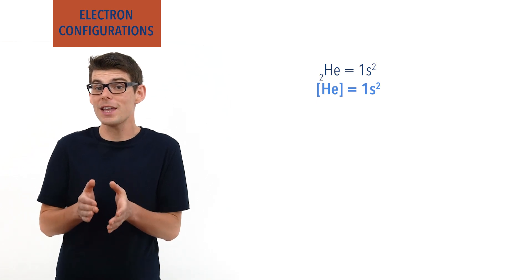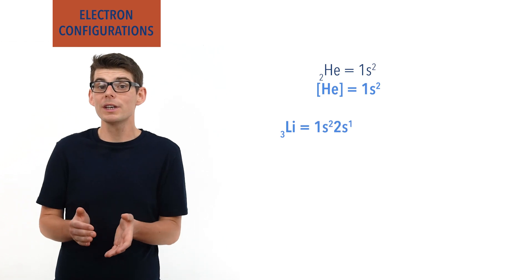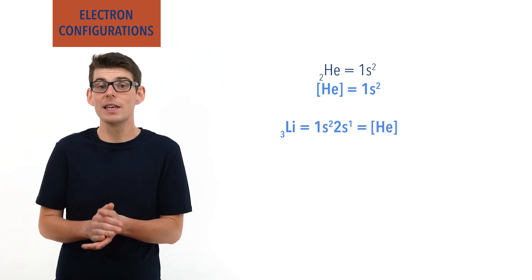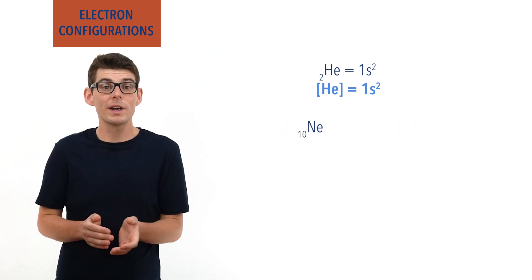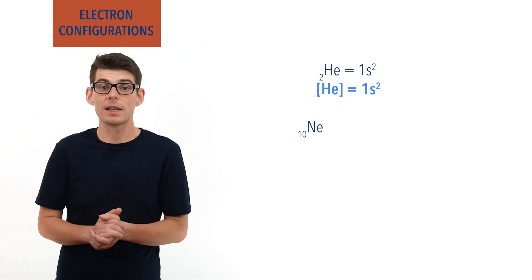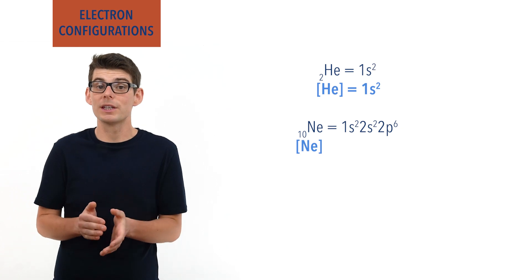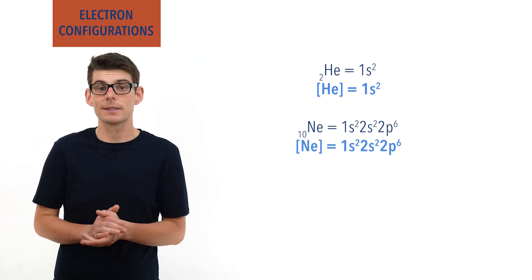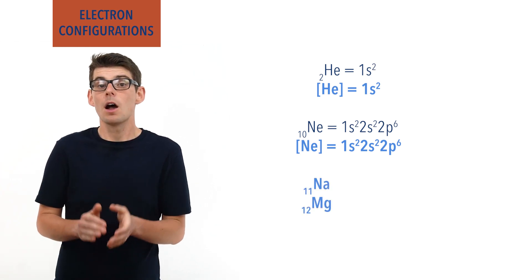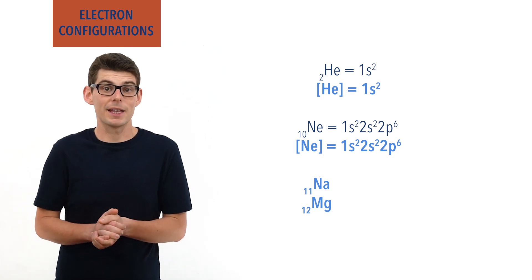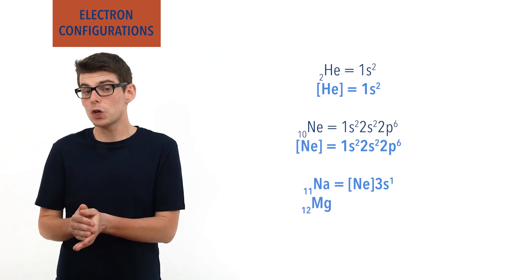Lithium, for example, has 3 electrons, and rather than write out 1s2, 2s1, we can write it as [He] 2s1. Equally, neon has an electron configuration of 1s2, 2s2, 2p6, meaning [Ne] is used to represent 1s2, 2s2, 2p6. The electron configurations of sodium and magnesium are therefore written as [Ne] 3s1 for sodium and [Ne] 3s2 for magnesium.